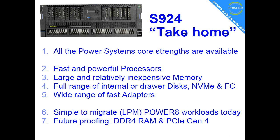We have all the Power System core strengths available in these new range of Power9 servers. We have a new faster processor, larger memory, lots and lots of disk options and really fast adapters. If you've got workloads running on Power7 or 8, you could just migrate those over right now and get the benefits of your Power9 machine. We also had really good timing because the standards for DDR4 and PCI Gen 4 were available just a few months before we released, so we could pick those up and get a great deal of future-proofing in these new machines.